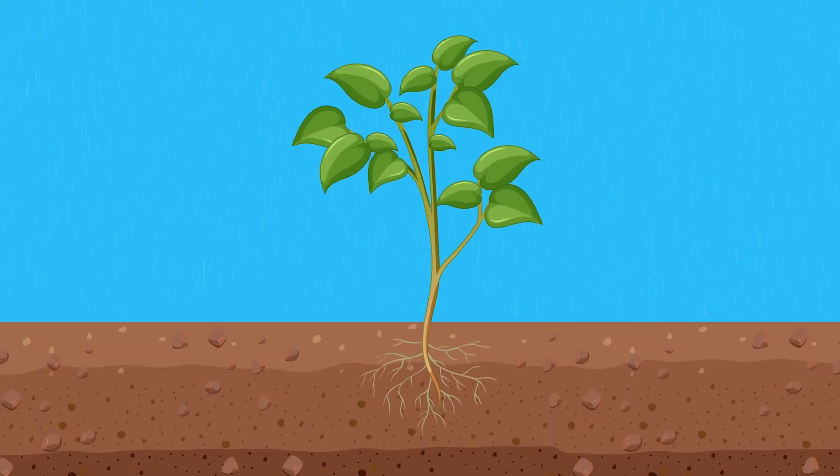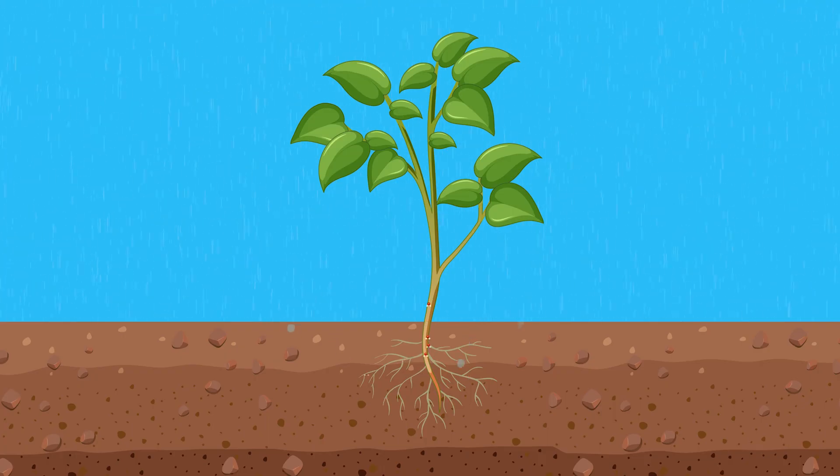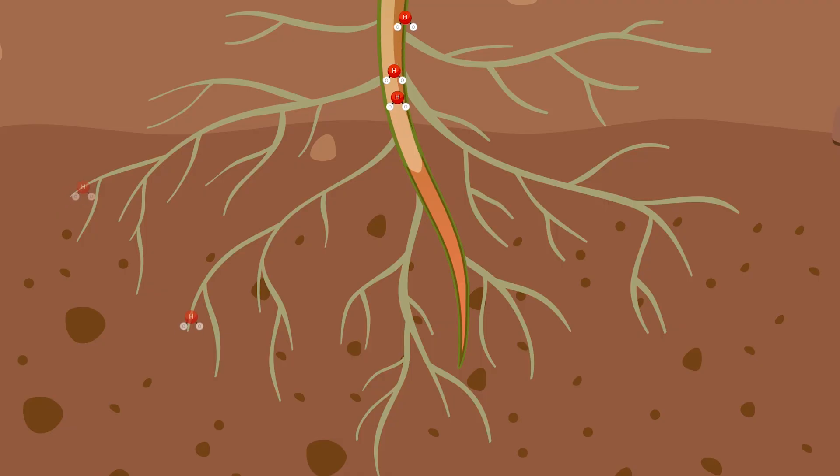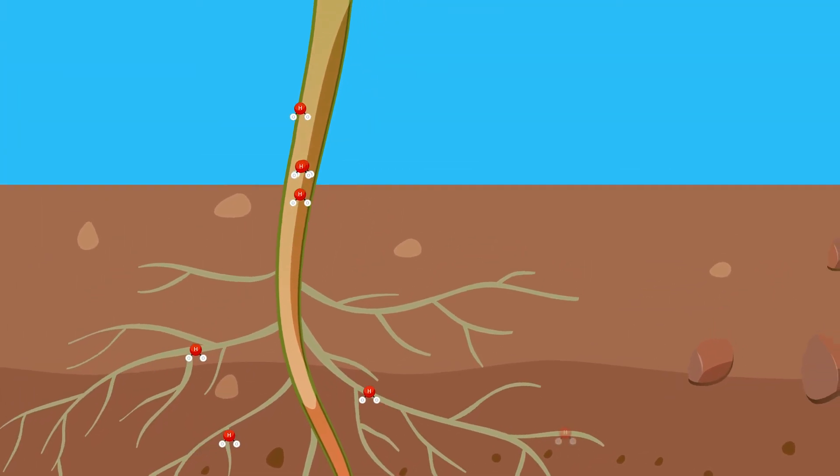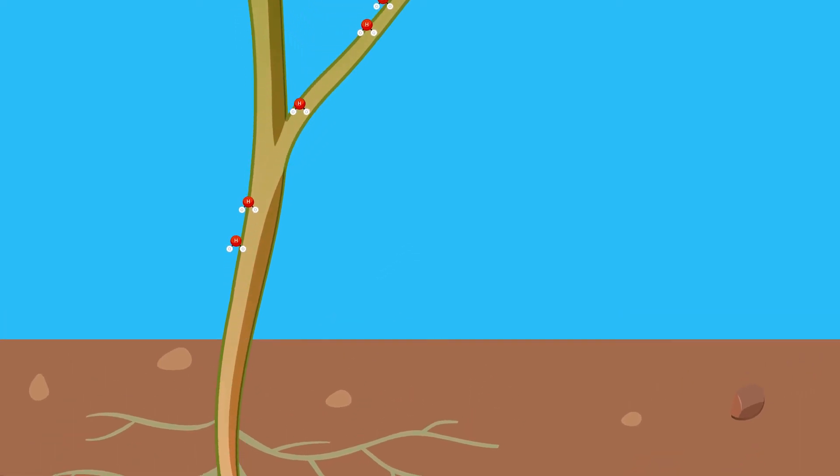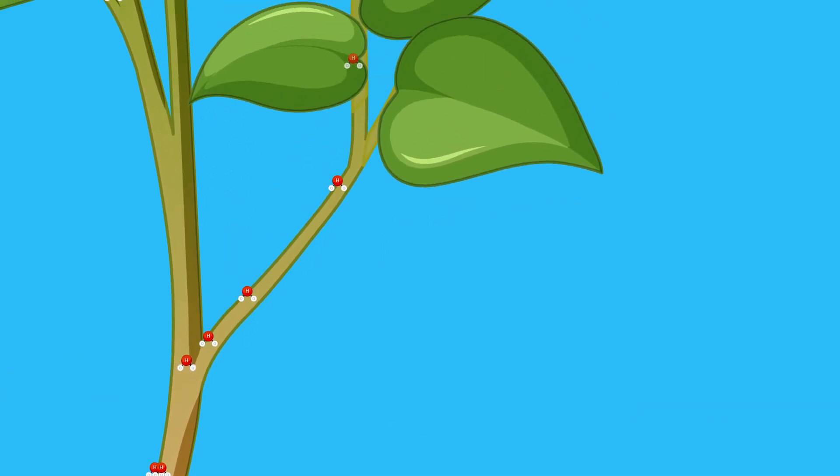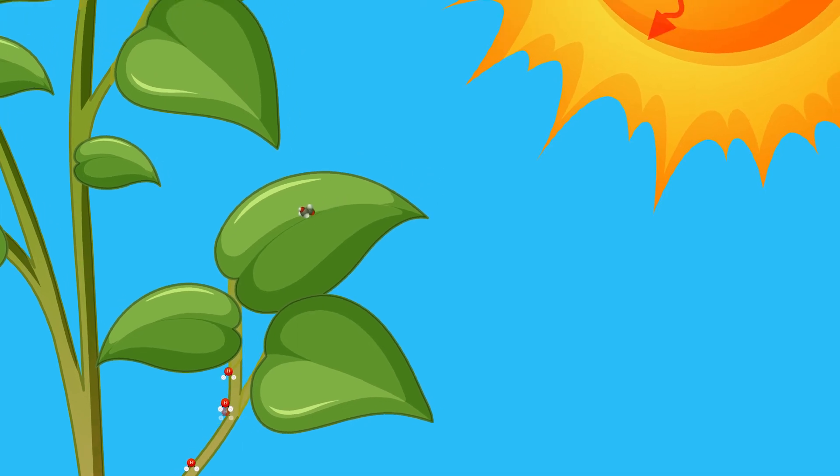Plants absorb water through their roots to transport nutrients and carry out photosynthesis. During photosynthesis, plants use the energy from sunlight to convert water and carbon dioxide from the air into glucose, a type of sugar. Oxygen is released as a by-product of this process.